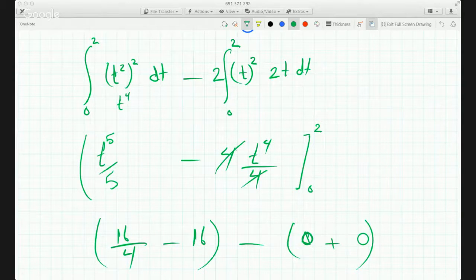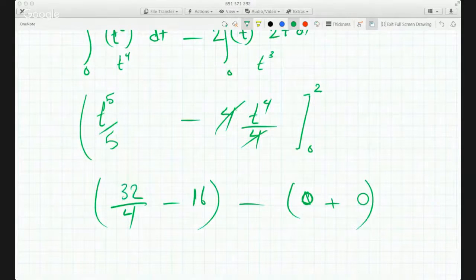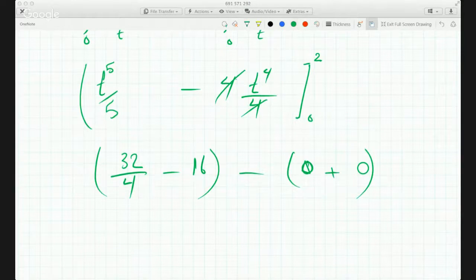And so this is 32 over 5 minus 64 over 4. And 0 makes it 0.